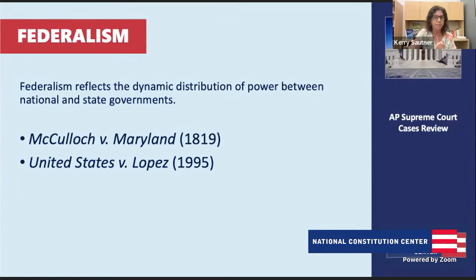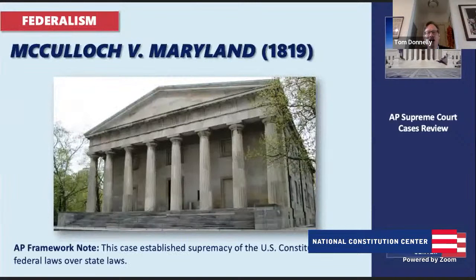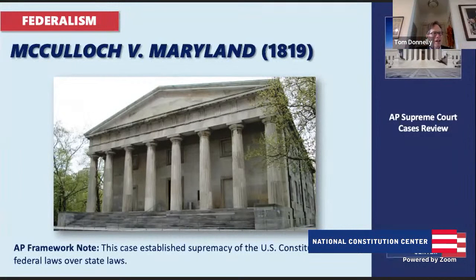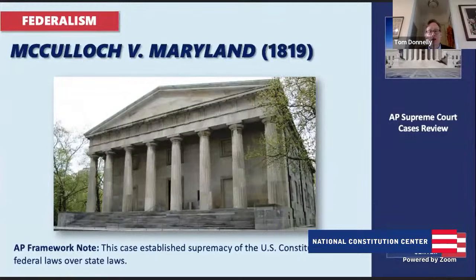McCulloch v. Maryland, another Marshall Court decision from 1819, deals with the constitutionality of a national bank. Alexander Hamilton thought Congress had the power to charter one; Thomas Jefferson did not. Maryland passed a tax effectively trying to tax the National Bank out of existence. Maryland's argument was that there's no 'charter bank' clause in the Constitution, so Congress lacks that power.